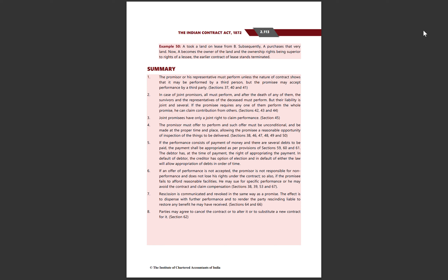Hello everyone, welcome back to my channel. Today we will be discussing the summary of Unit 4 of ICA, that is the Indian Contract Act 1872. The promisor or his representative must perform, unless the nature of the contract shows that it may be performed by a third person, but the promisee may accept performance by a third party.